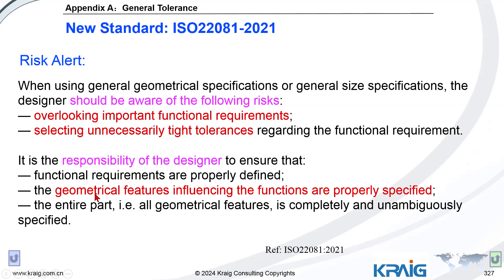Third, it is the responsibility of the designer to ensure that function requirements are properly defined and that geometrical features are properly specified. The standard is essentially saying: take care of your drawing, don't rely on our standard to do your job. All geometrical features must be completely and unambiguously specified — make a good drawing before you use general tolerances.